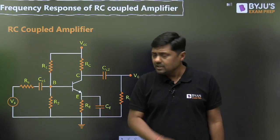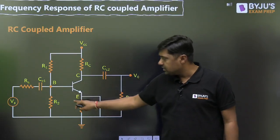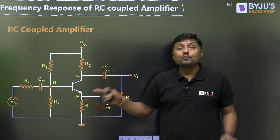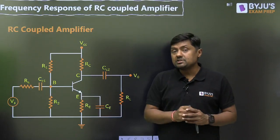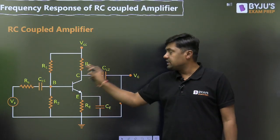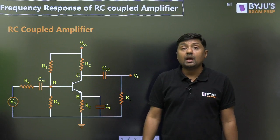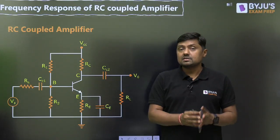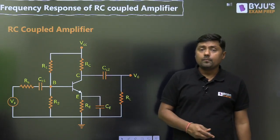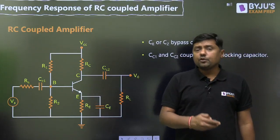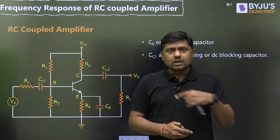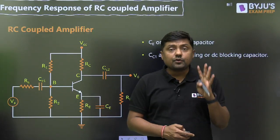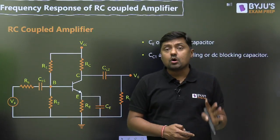Between base and emitter, we have diffusion capacitance. Between base and collector, we have transition capacitance. What is the frequency response? All these capacitors will affect the frequency response curve — that is, gain versus frequency of the BJT.